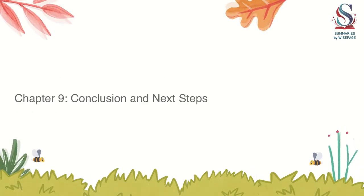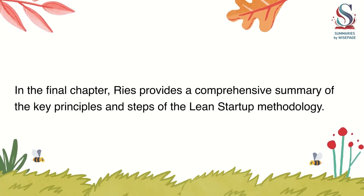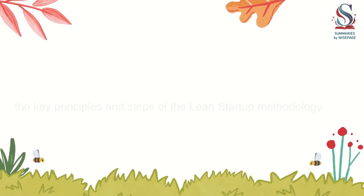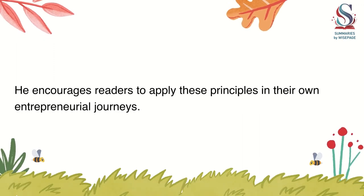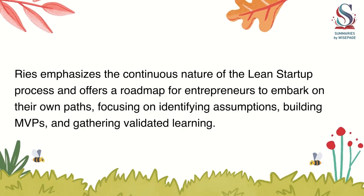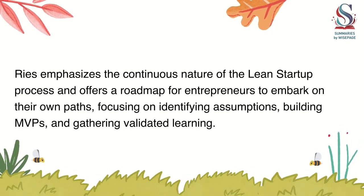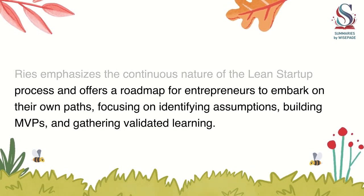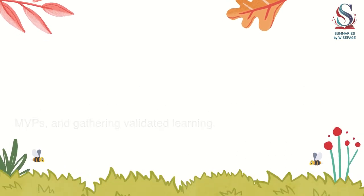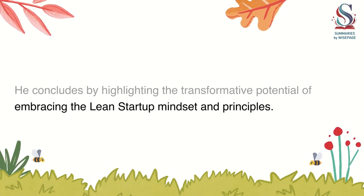Chapter 9: Conclusion and Next Steps. Ries provides a comprehensive summary of the key principles and steps of the Lean Startup methodology and encourages readers to apply these principles in their own entrepreneurial journeys. He emphasizes the continuous nature of the Lean Startup process and offers a roadmap for entrepreneurs, focusing on identifying assumptions, building MVPs, and gathering validated learning. He concludes by highlighting the transformative potential of embracing the Lean Startup mindset and principles.